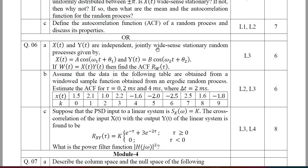Another important problem: given a jointly wide-sense stationary random process where x(t) = A·cos(ω₁t + θ₁) and y(t) = B·cos(ωt + θ₂), and w(t) = x(t)·y(t), find the ACF R_w(τ). Also, from a given table of data, estimate the ACF for τ = 0, 2 ms, and 4 ms where Δt = 2 ms. That carries 6 marks.